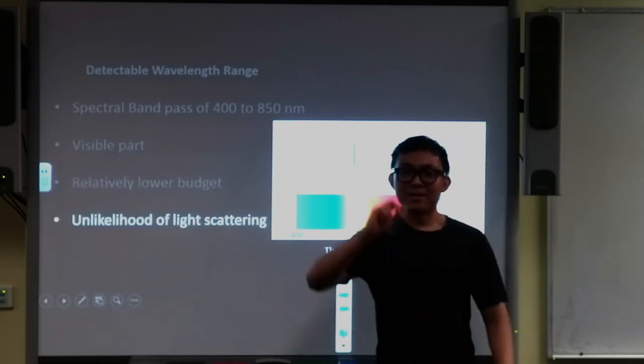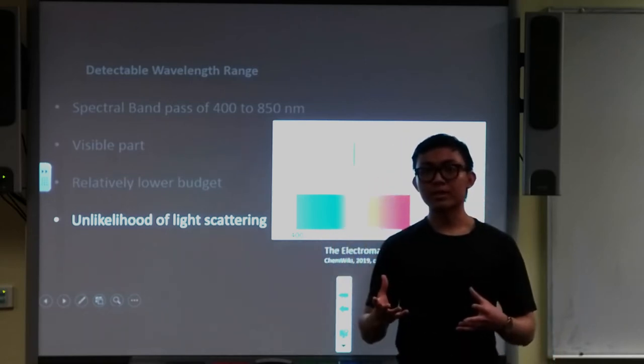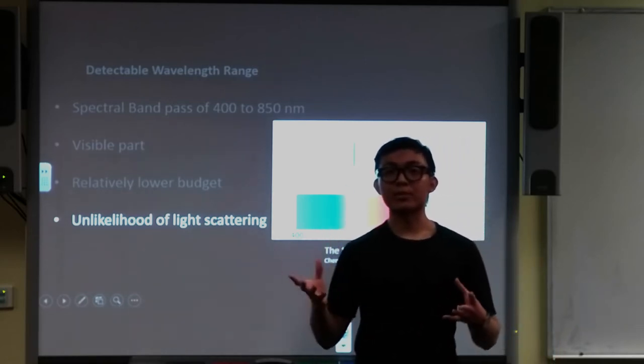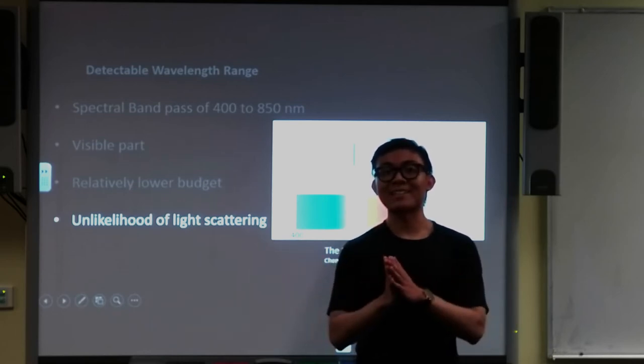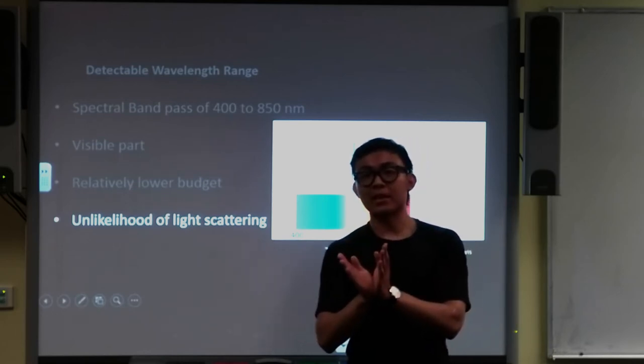Since the visible spectrum is used, space is a good place for telescope because light is less likely to be scattered. So the images are less likely to be distorted.